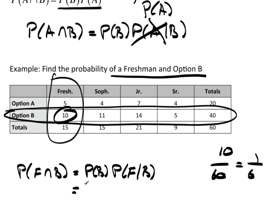Well, the probability of option B is 40 out of 60. The probability of a freshman given B. Well, given B happened. I'm right here. The probability of a freshman is 10 out of 40. And, you see the 40's cancel and I end up with 10 out of 60.